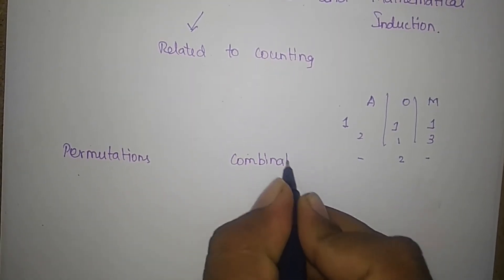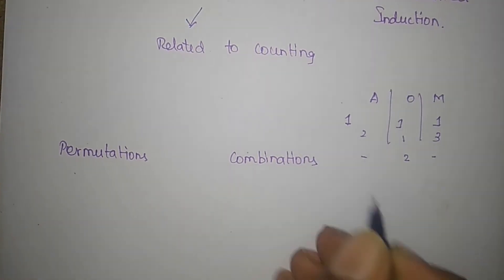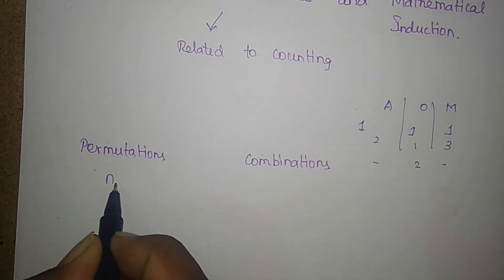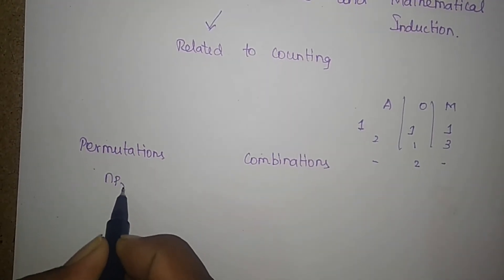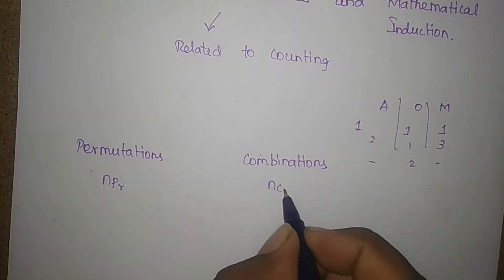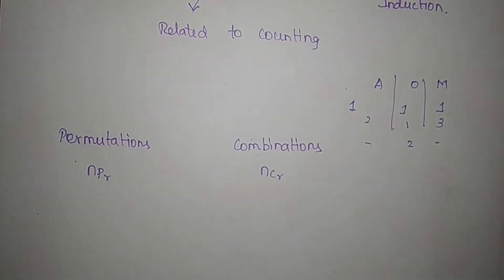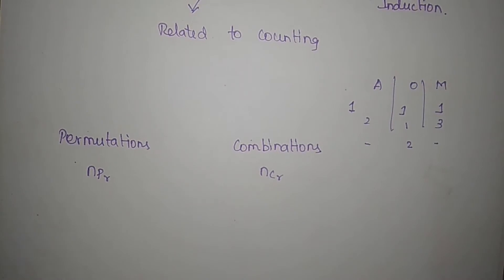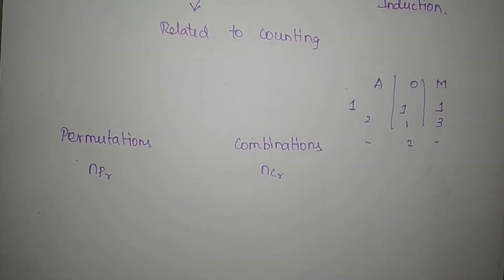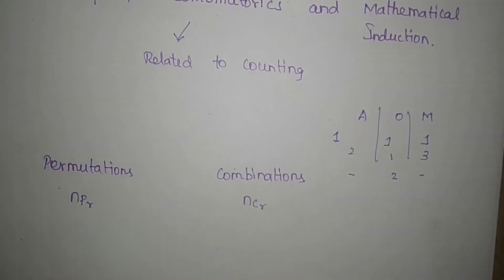This is counting because we use combinatorics. Combinatorics maximum is permutations and combinations — nPr and nCr. These details will be in the next videos, but now just for a simple introduction.